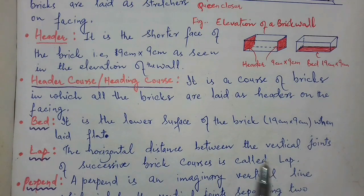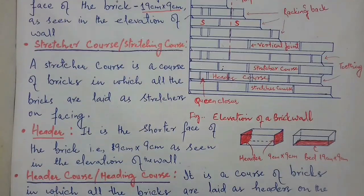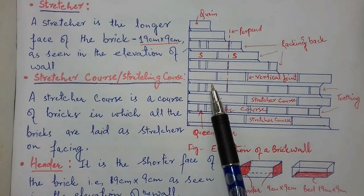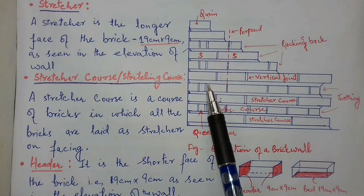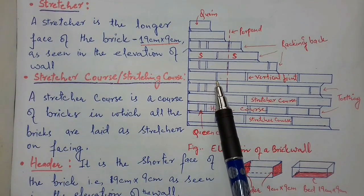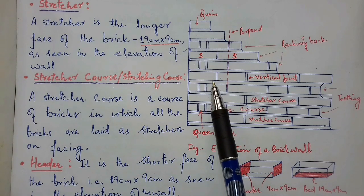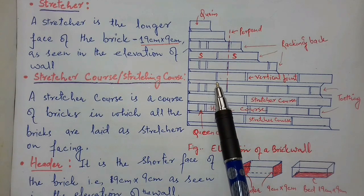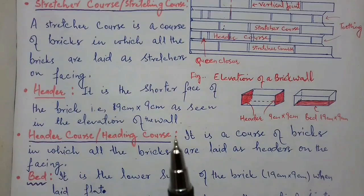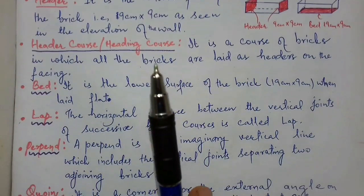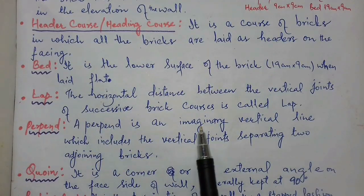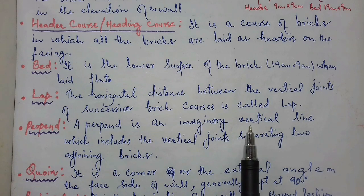Lap: the horizontal distance between vertical joints of successive brick courses is called lap. I will show you this diagrammatically — this distance from this joint to this joint, this horizontal distance, is known as lap.